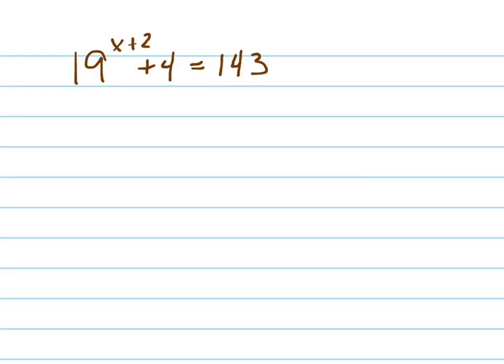Let's solve this equation for x. This is an exponential equation, so the first thing we're going to do is try to get x by itself, but we have to get rid of the 4. So I'm going to subtract 4 from both sides.